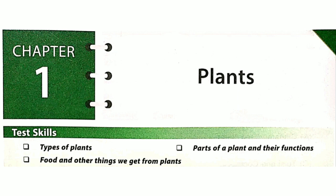National Science Olympiad for Class 2: Plants. Test skills include types of plants, food and other things we get from plants, and parts of a plant and their functions. Each question will remain on the screen for 30 seconds. You can pause the video if you need more time.